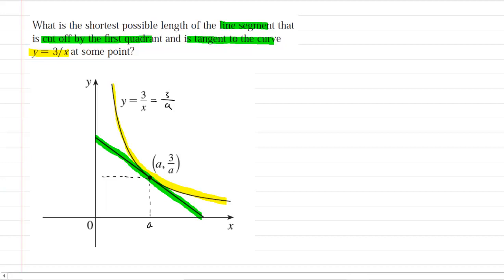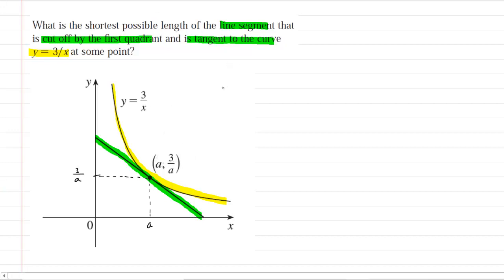So basically right there would be 3 over a. So this is the picture — that's step 1. Step 2 is to come up with a couple of equations. One equation that we're going to need is what I like to call the constraint equation.